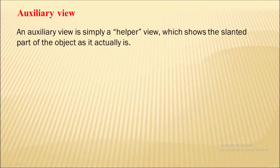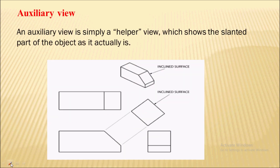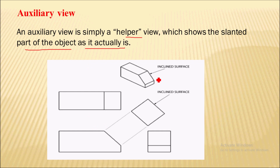The next type of view is the auxiliary view. An auxiliary view is simply a helper view which shows the slanted part of an object as it actually is. In orthographic views, we cannot show an inclined surface in the orthographic drawing — this inclined surface cannot be shown in orthographic views.